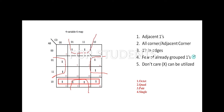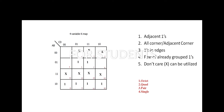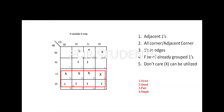For the fourth and fifth rules: in this case, we will get a quad. And the don't care helps to form an octet — maximum grouping.